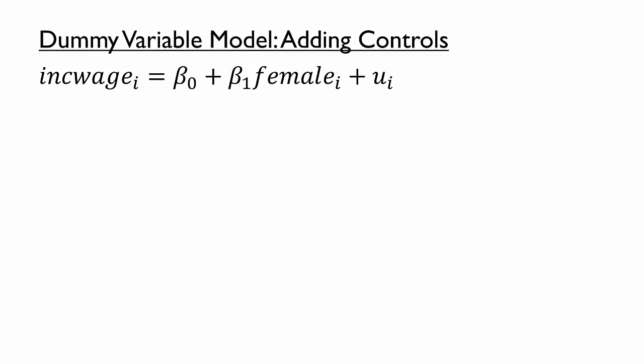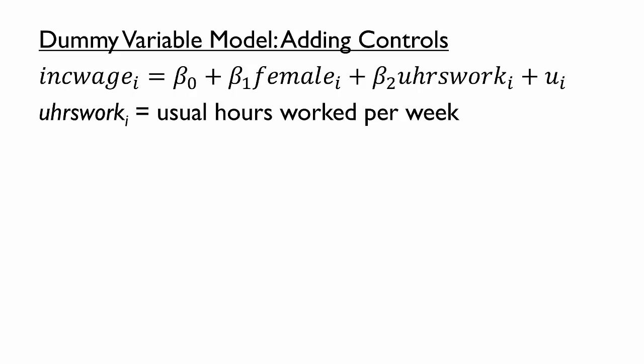We can add control variables to the model. The CPS has a variable for the usual number of hours worked each week. If we add this variable to the model, then the beta 1 coefficient is now interpreted as the female-male pay gap conditional on usual hours worked. That is, it tells us the difference in average incomes of women and men who worked similar hours each week. Let's now turn to the model's estimates.